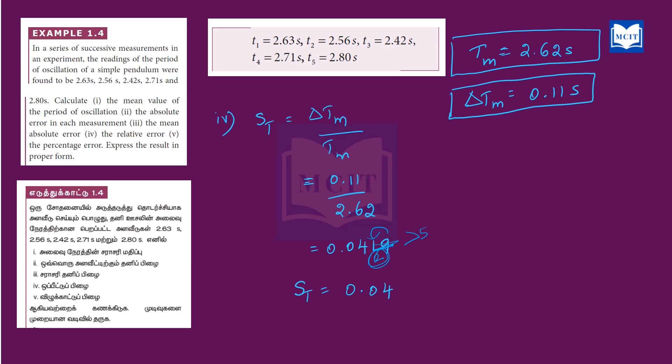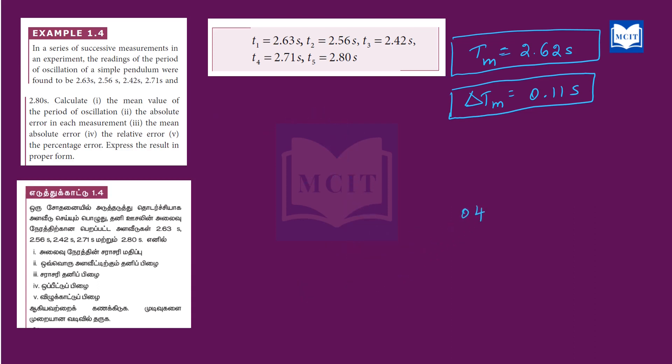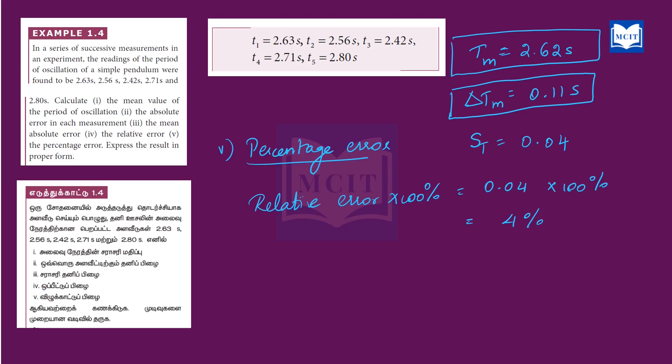The fifth subdivision is the percentage error. Percentage error is nothing but relative error multiplied by 100%. So 0.04 into 100% gives us 4%. We have now solved all five subdivisions.